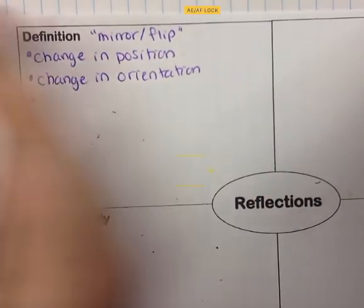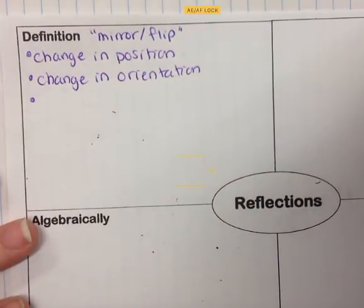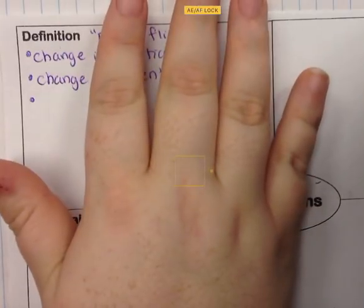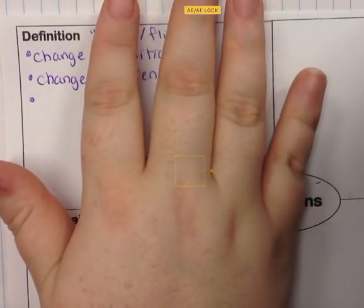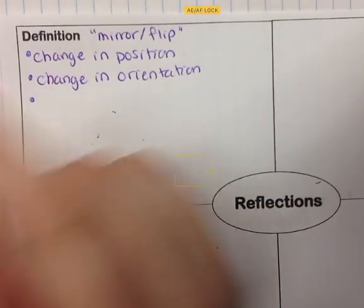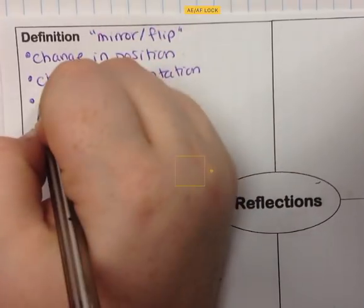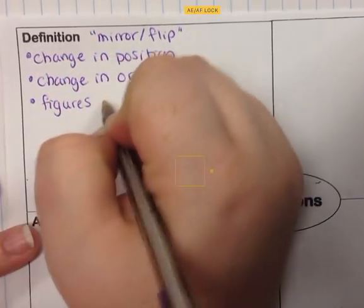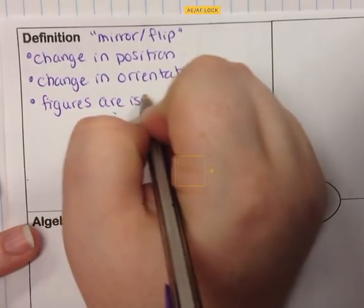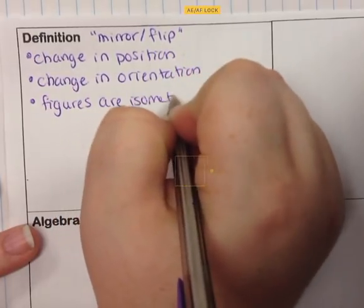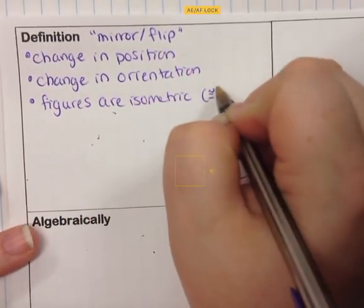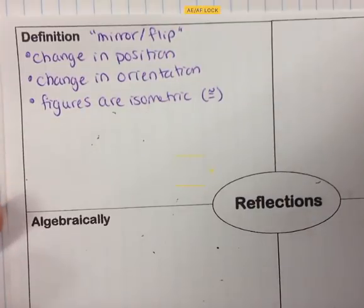As it flips, the figures are still the same size — I'm not making my hand get bigger or smaller, and I'm not changing the shape of it. So the figures are isometric, which means that they are congruent. The pre-image and image are congruent to each other.